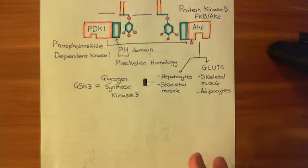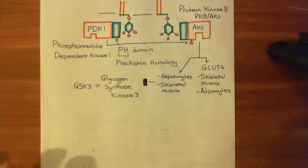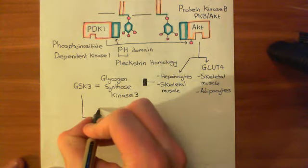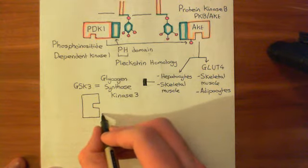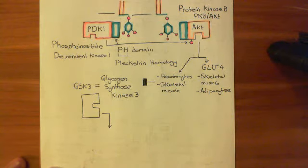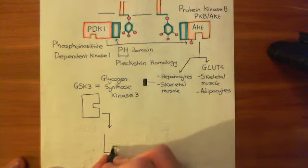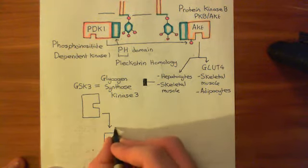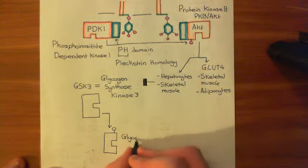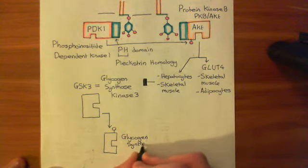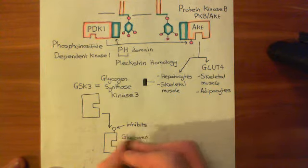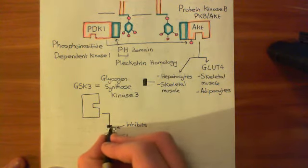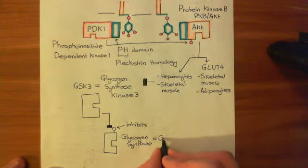What does glycogen synthase kinase 3 usually do? Usually, glycogen synthase kinase 3 phosphorylates and inactivates another enzyme: glycogen synthase. When GSK3 does not have a phosphate group stuck on it by protein kinase B, it itself adds a phosphate group onto glycogen synthase, and this is inhibitory — the enzyme stops working. So usually, glycogen synthase kinase 3 is inhibiting glycogen synthase, abbreviated to GS.